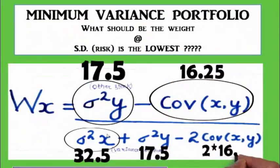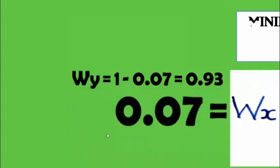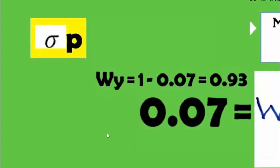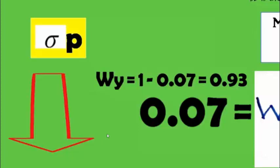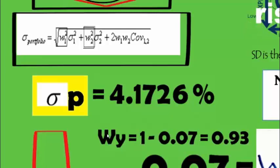Applying the formula — variance of Y minus covariance, divided by (variance of X plus variance of Y minus 2 × covariance) — we get a weight for stock X of 0.07, and therefore weight of stock Y is 1 minus 0.07 equals 0.93. At these weights, the risk (standard deviation) of the portfolio is minimized at approximately 4.1726%, which is the least possible risk. Changing these weights will result in a higher risk.